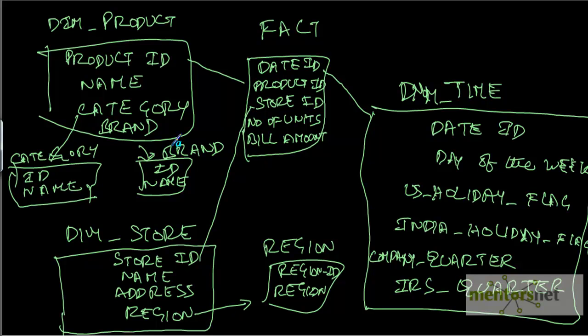The disadvantage of denormalizing all the dimensions and putting into one dimension, like product brand and category, is if you want to know what are the distinct brands sold in Walmart, you need to run a query which says select distinct brand from product dimension. That distinct will take lot of time to actually sort and all that.